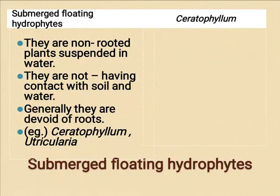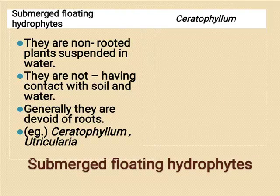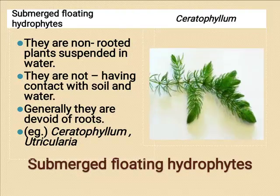Submerged floating hydrophytes — best examples are Ceratophyllum and Utricularia. They are in contact with water alone, not on the surface but just below the water surface. The plants under this group are absolutely free from any necessity of transpiration. They are found in the best-lit and best-aerated part of the water.